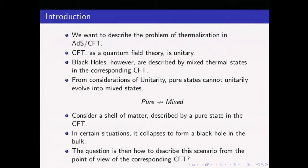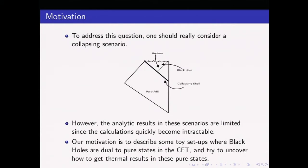There are cases in this duality where you can start with a shell of matter described by a pure state in the CFT, and under certain considerations they can collapse to form a black hole. The right kind of setup for understanding these models would be a real collapse scenario, but analytic calculations in these scenarios get very quickly complicated. So we want to understand some basic toy setups available in ADS-3/CFT-2 where there are black holes dual to pure states.